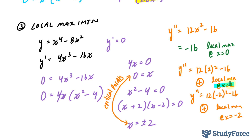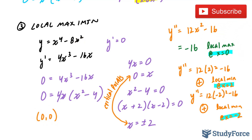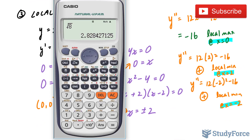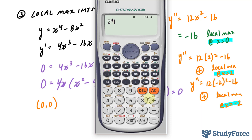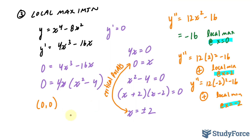Let me highlight these and find the y-coordinates for the three critical points by substituting into the original function. For x equals 0: 0 to the power of 4 minus 8 times 0 equals 0, giving the point (0, 0). For x equals 2: 2 to the power of 4 minus 8 times 2 squared gives negative 16, so local minimum at (2, −16). And substituting negative 2 gives the same y-coordinate, so another local minimum at (−2, −16).